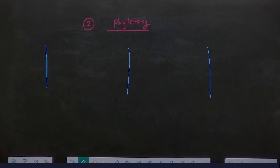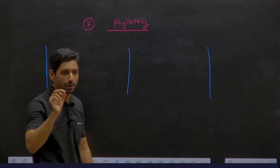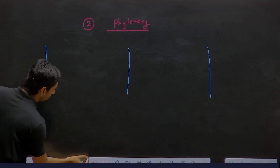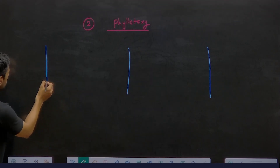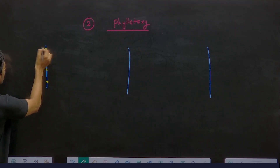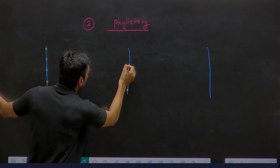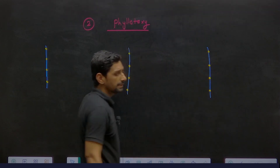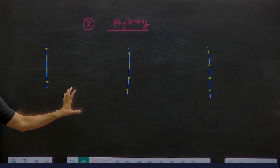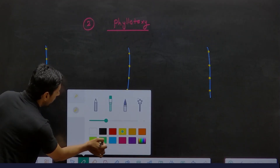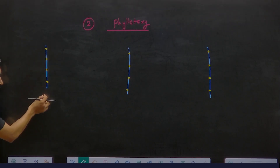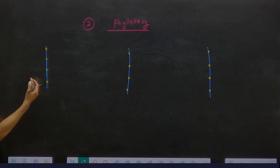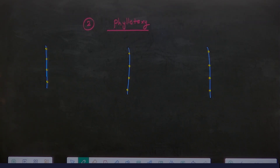Okay, so phyllotaxy — regarding this discussion again, a new point will be there. You know that leaves are formed from the nodes. I will draw some nodes on a stem. So this is the yellow color dot — what is this? Nodes. And nodes give rise to side branches and leaves. We are going to draw leaves here. Let's start. How is the arrangement of the leaf? This is the stem and side branch. This is the plant's stem and the side branch.